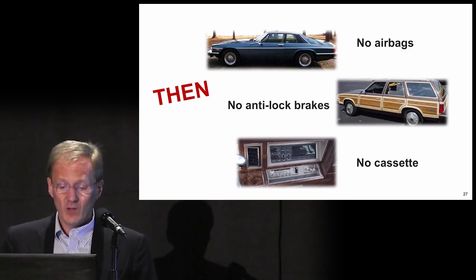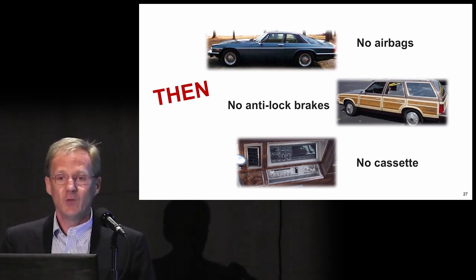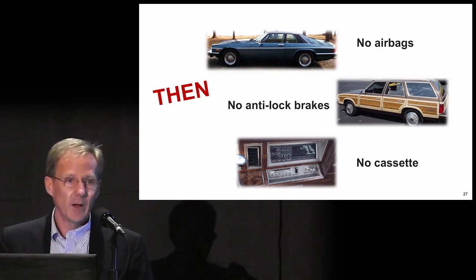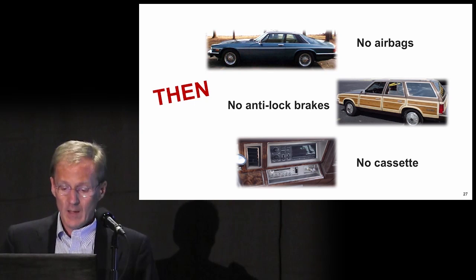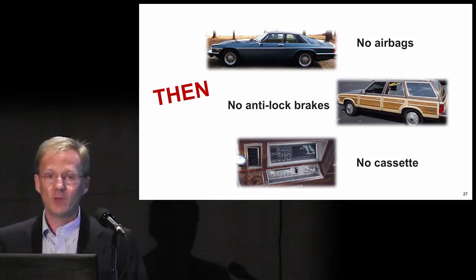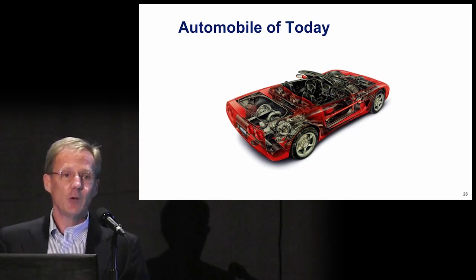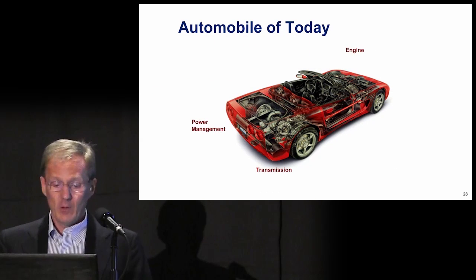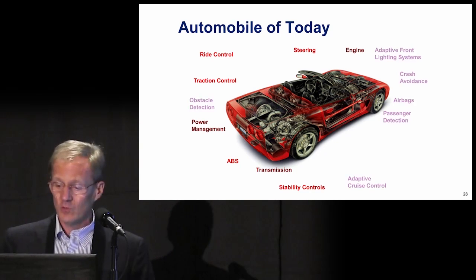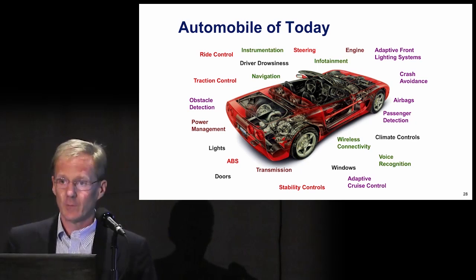The world back in the 70s had no airbags, no anti-lock brakes, no cassettes. If you had a transistor in your car, it was in your radio. Part of what's happened over this time interval is a transformation — for example, the automobile today has 50 to 100 microcontrollers in powertrain, chassis systems, safety systems, and convenience systems throughout. A remarkable transformation over that time.